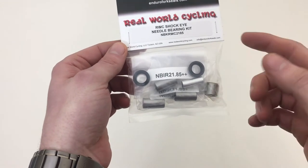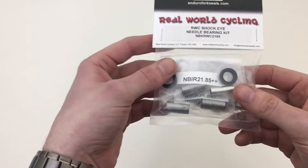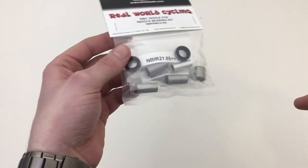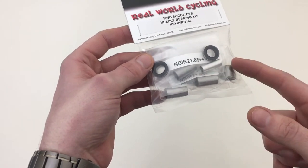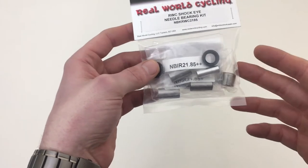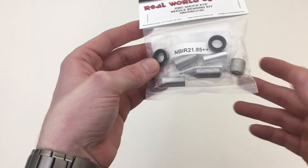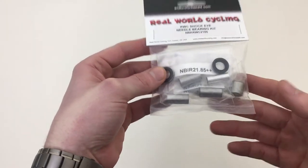If it's not listed there, you can contact Chris at Real World Cycling. He's really helpful and they'll let you know what kit you need for yours. I'm going to be using just one needle bearing kit for my upper shock mount on my EVIL because you generally don't need it for the lower one because it doesn't move as much. But you can run both if you want. I'm just choosing to run a single one.